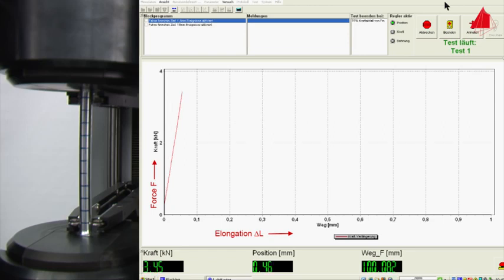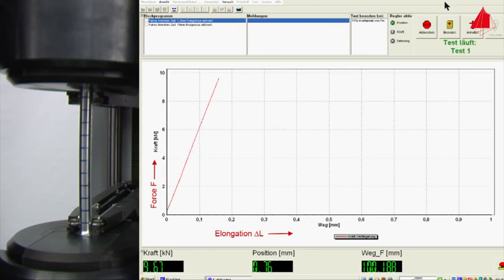The initial linear curve in the force-elongation diagram again shows the elastic behavior of the test material.